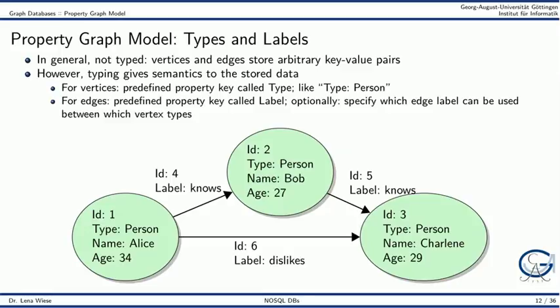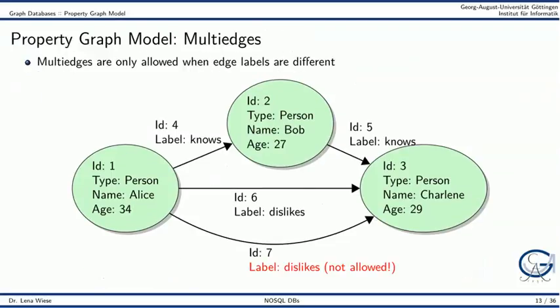For vertices, we can use a predefined property key called 'type.' For example, for a person type, we can prescribe which properties are allowed or necessary for persons. For edges, the property key used for typing is often called a label. We can optionally specify which edge label is allowed between which vertex types. Duplicate edge labels between two nodes are usually unnecessary, which is why multi-edges are only allowed when edge labels are different.